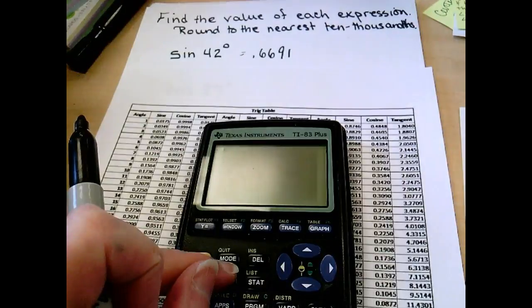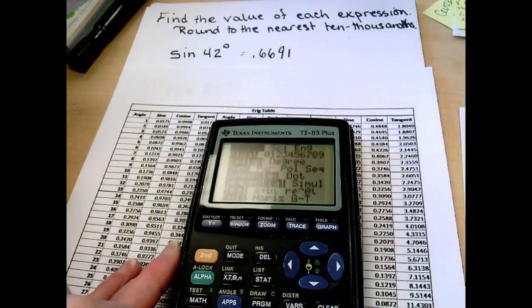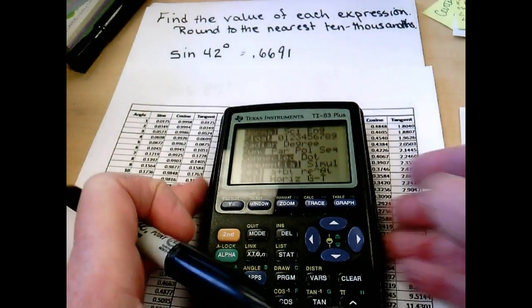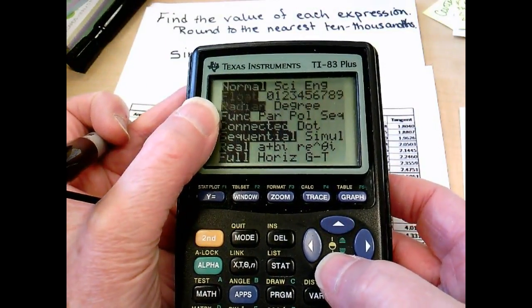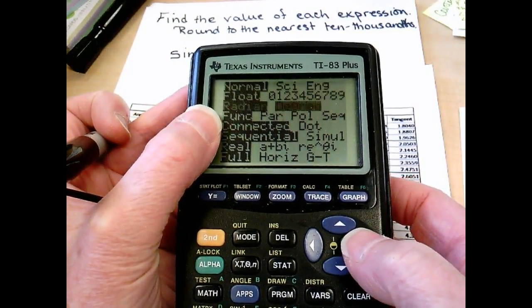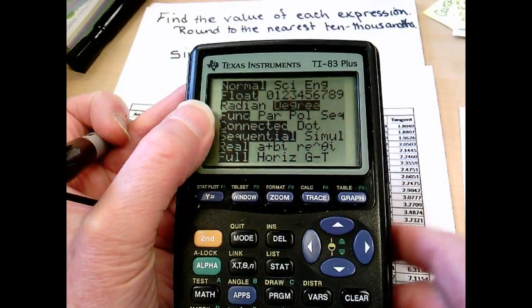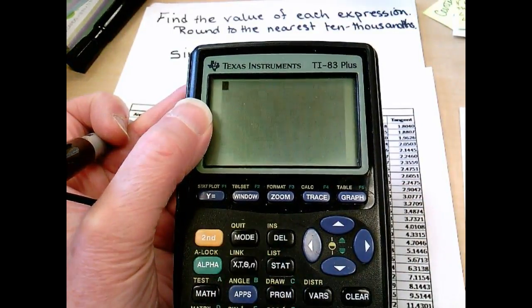First thing you want to do is always check your mode. Make sure you are not in radians, because a lot of my students right now are using radians. So go over to degrees, enter, and then we can exit back out of that second mode.